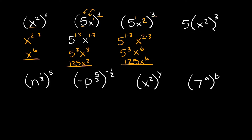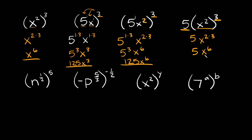Now one more similar problem: we have 5 times, in parentheses, x squared raised to the third power. First, apply this exponent to everything inside of the parentheses. Since the 5 is outside of the parentheses, this exponent does not get applied to it. We only apply it to what's inside: x squared raised to the third power gives x raised to 2 times 3, which is x to the sixth. The 5 just comes straight down, so your final answer is 5x to the sixth.